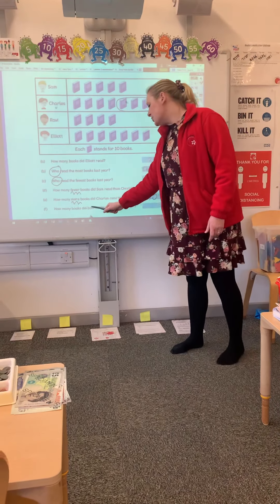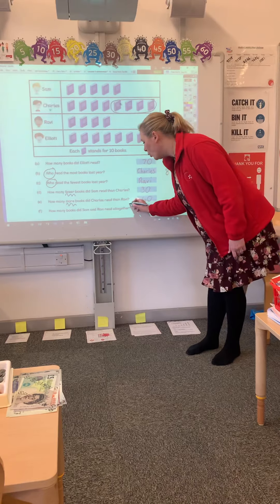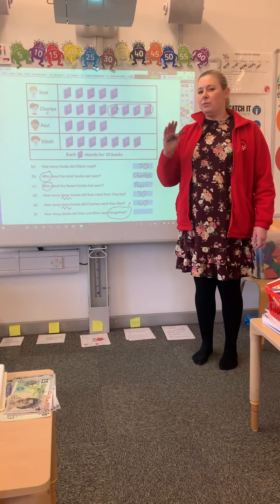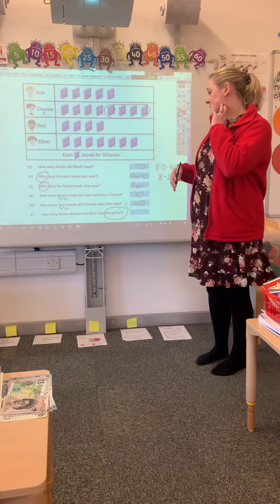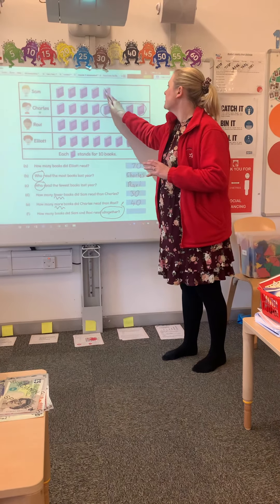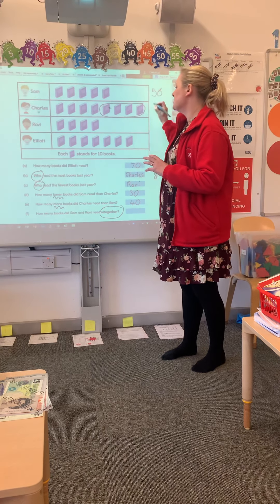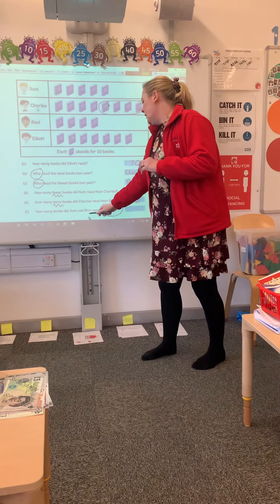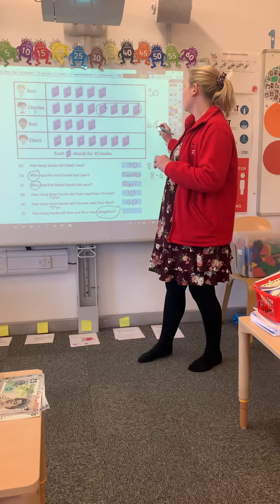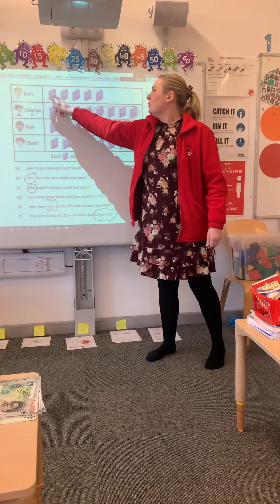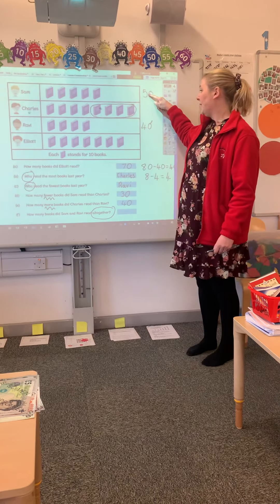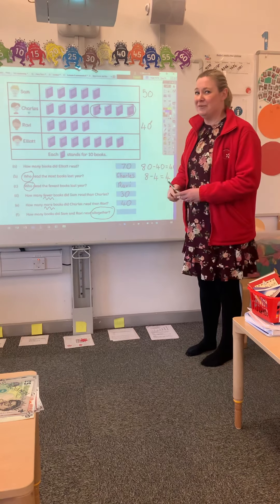Final question: how many books did Sam and Ravi read altogether? Think about what 'altogether' means — we're combining those amounts. Sam has 10, 20, 30, 40, 50. And Ravi read 40. So the combined total is 10, 20, 30, 40, 50, 60, 70, 80, 90. Or I could simply add 50 plus 40, which also gives you a total of 90.